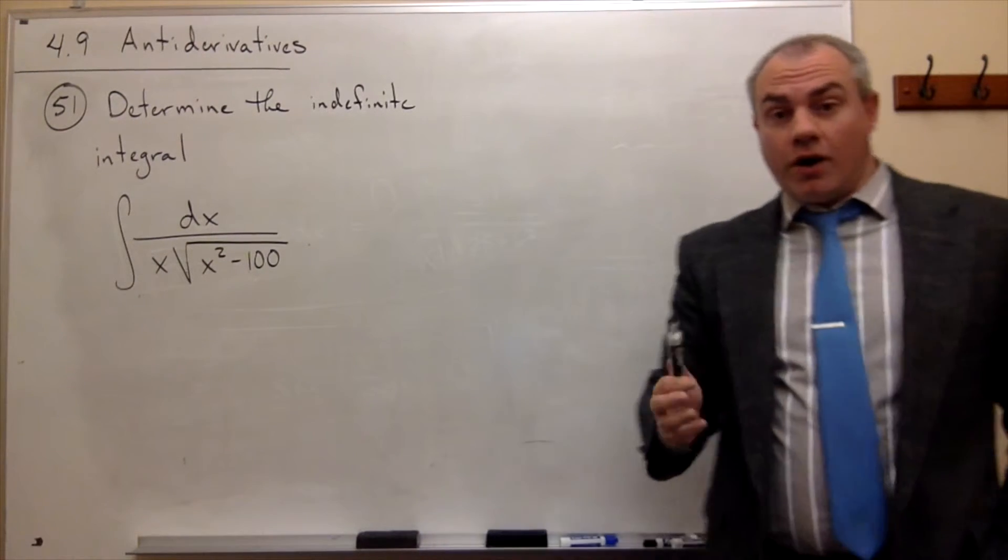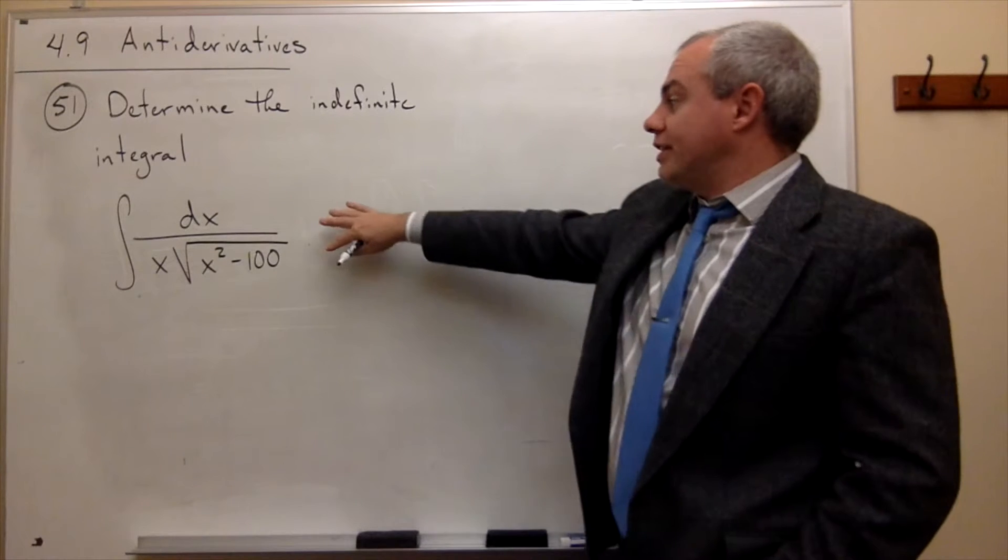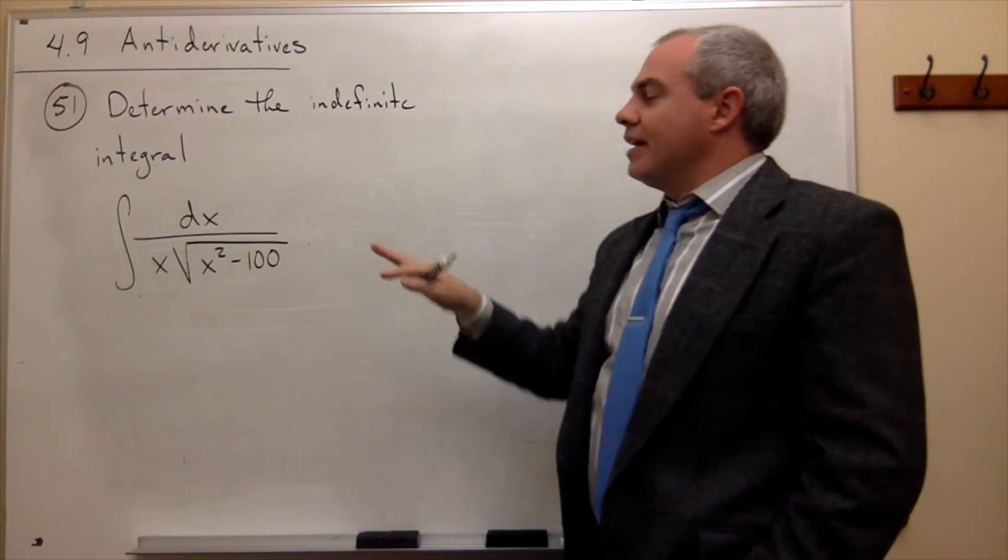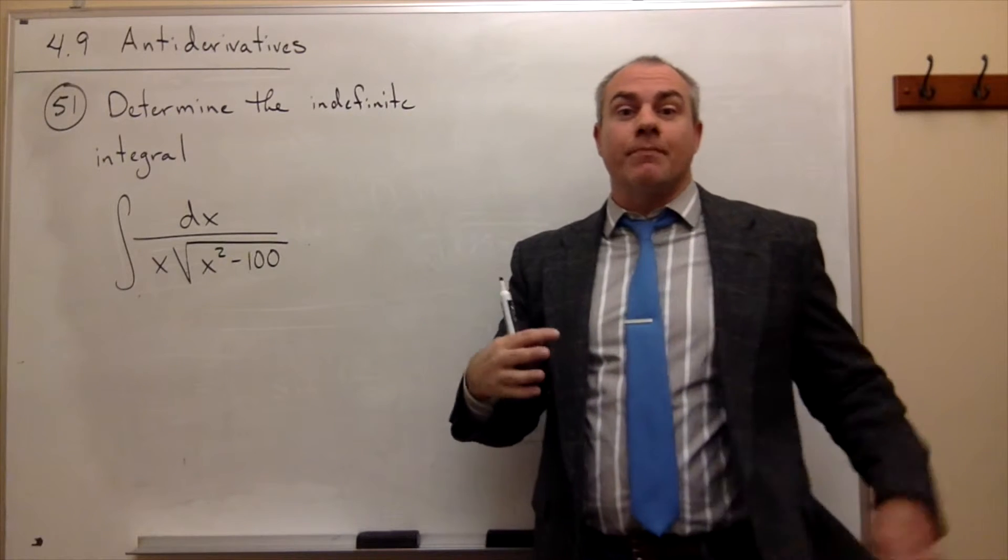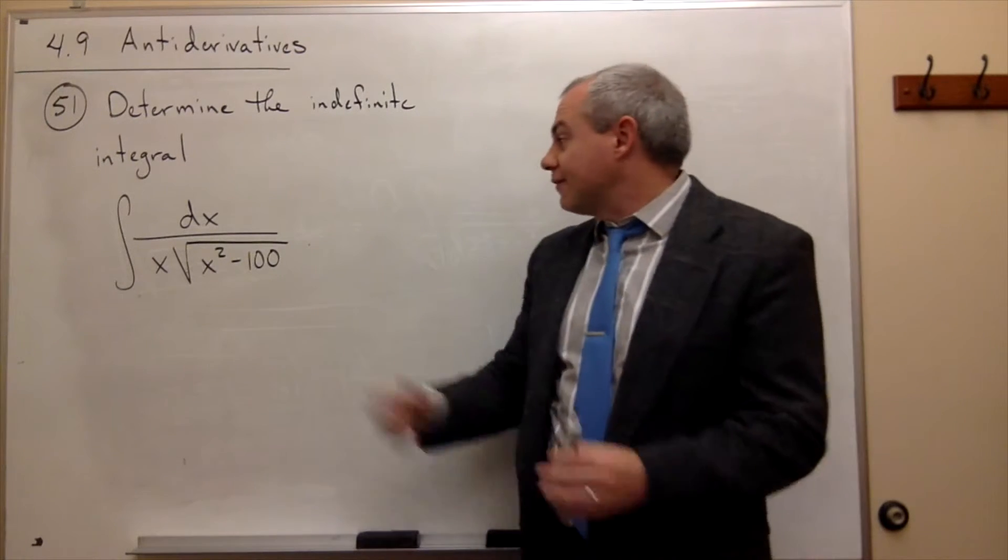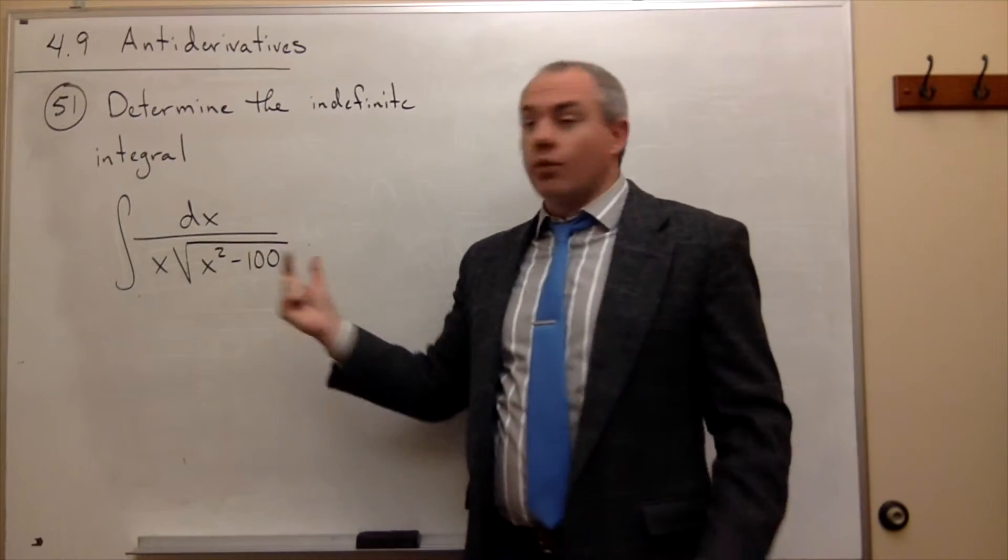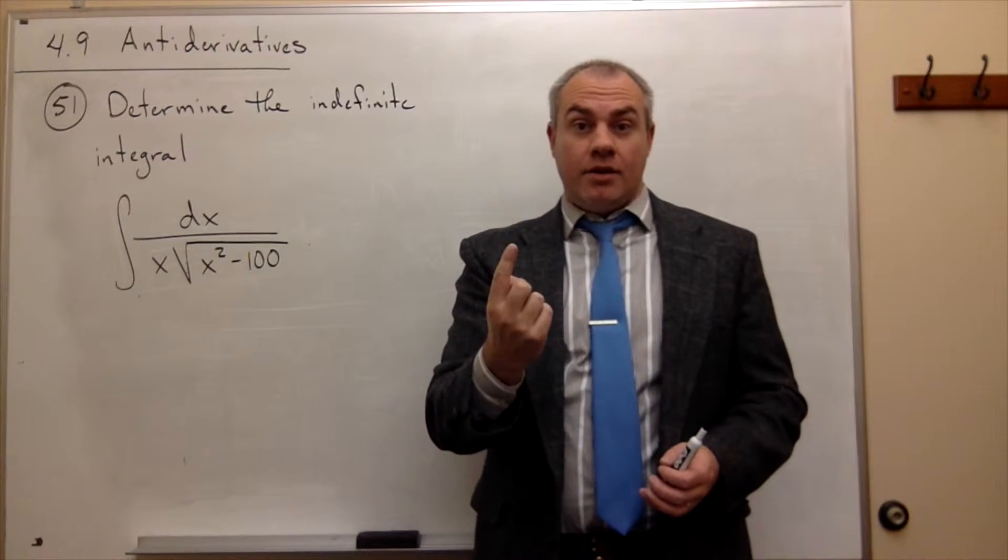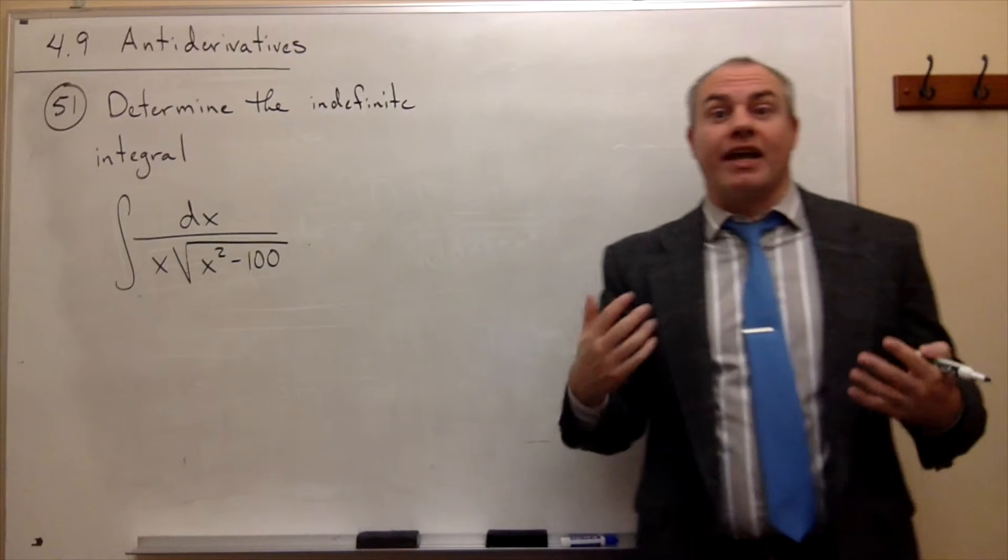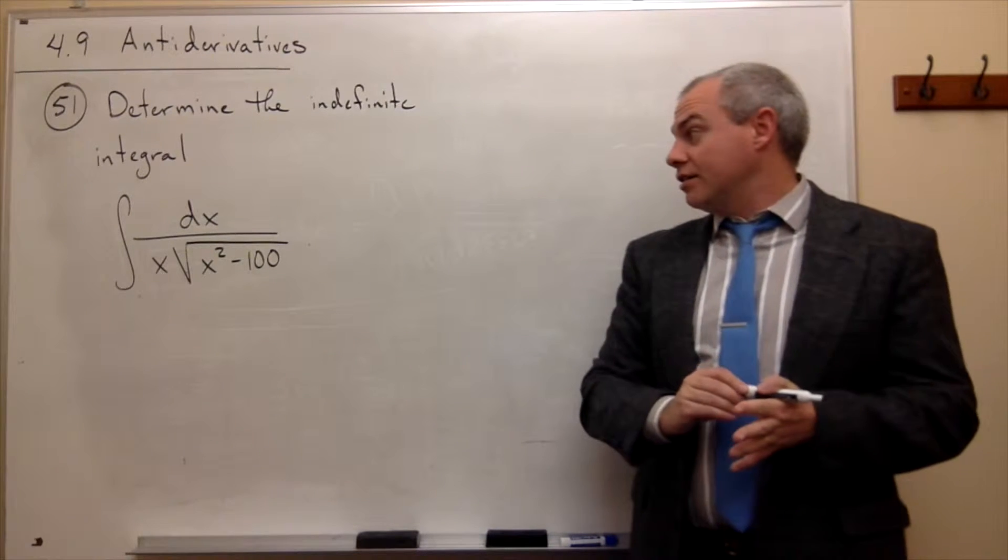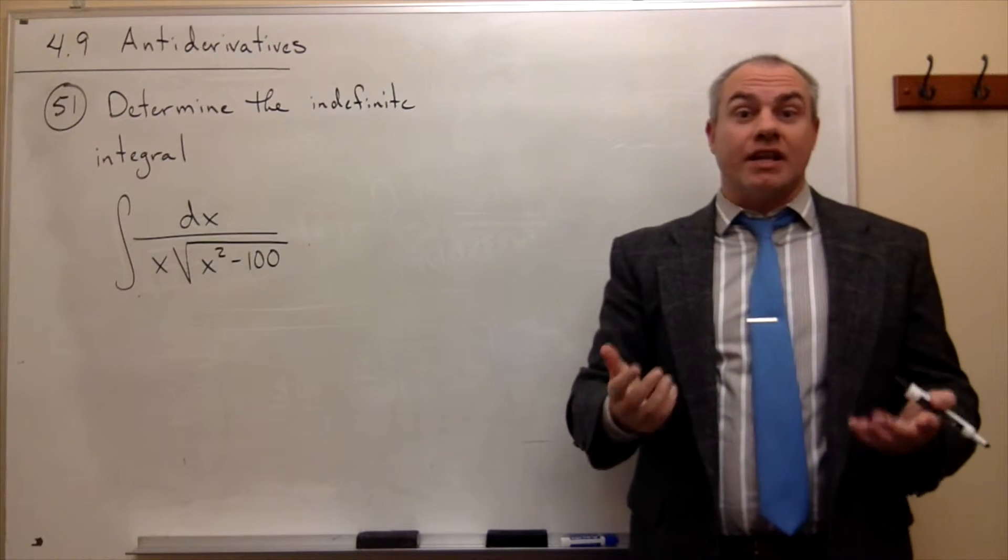All right, so I look at this and say, this looks very similar to something I already know. If this 100 were just a 1, then I would know what the anti-derivative is, correct? And the anti-derivative would be secant inverse of x.